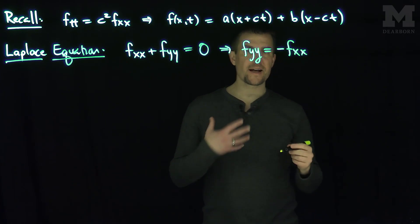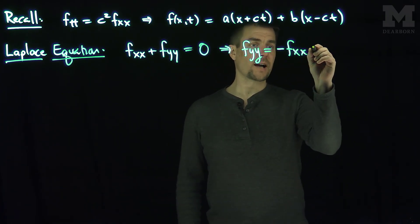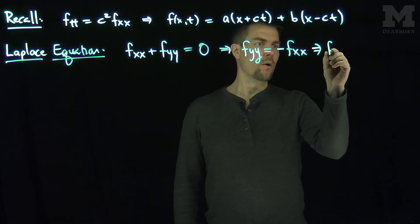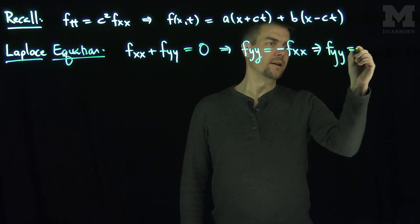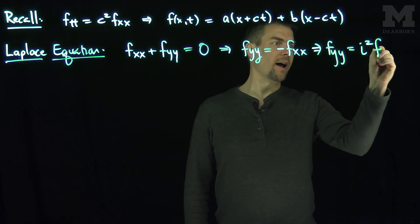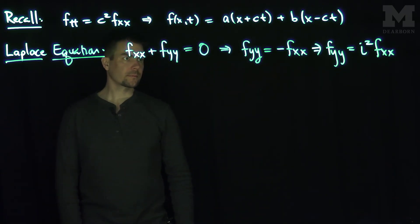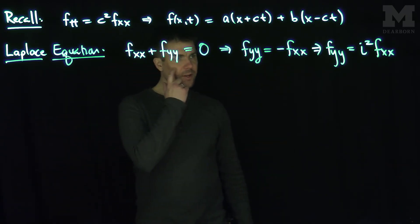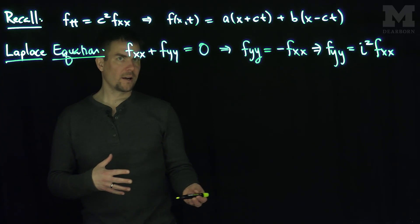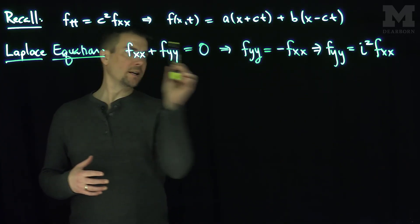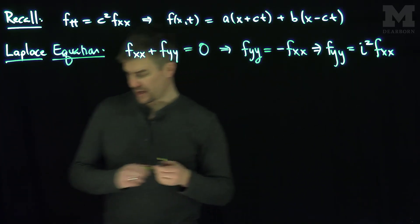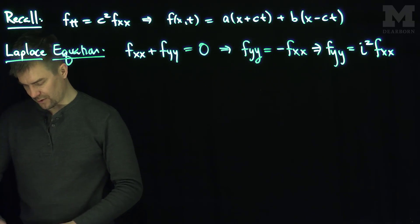So what we're going to do is write this one, and I'm going to write it as i squared. So this is f_yy equals i squared f_xx. And so what we see from this is we can say, at least formally, if I have c as being played by i. So let's test this out and see if it works.